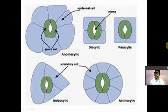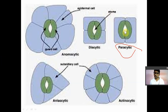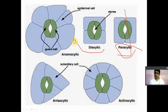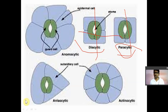Depending upon the arrangement of guard cells, subsidiary cells, and the stomatal opening, stomata are divided into different types. The first type is paracytic stomata. In paracytic stomata, the guard cells and subsidiary cells are parallel to each other — you can see the stomatal opening, and if you draw a vertical line, the guard cells and subsidiary cells are parallel. The second type is diacytic stomata, also known as cross-celled stomata, where the arrangement of guard cells and subsidiary cells is perpendicular.